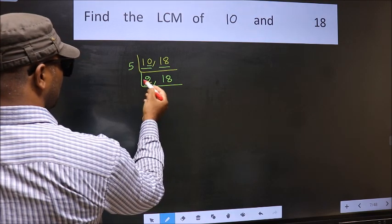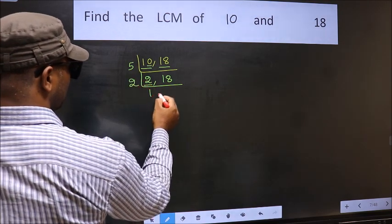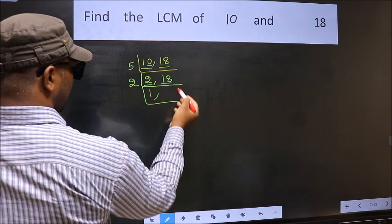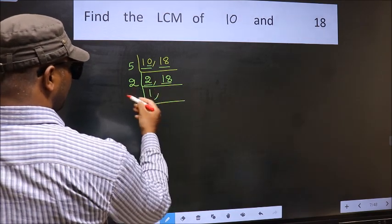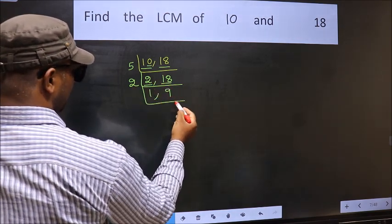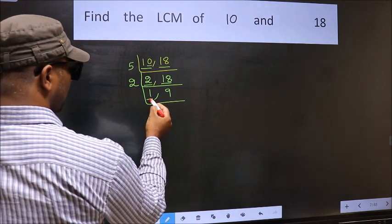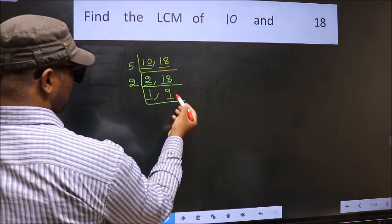Now here we have 2. 2 is a prime number so 2, 1 is 2. The other number 18. When do we get 18 in 2 table? 2, 9 is 18. Now we got 1 here so focus on the other number 9.